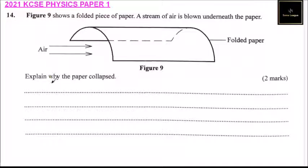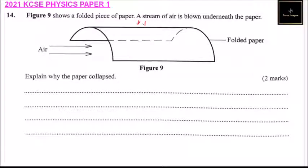We can explain this by using Bernoulli's principle, which states that an increase in speed of a fluid — in this case air is the fluid — decreases the pressure. So here, because we have atmospheric pressure acting downward, the moving air reduces the atmospheric pressure acting on the paper, and therefore that is why the paper collapses.